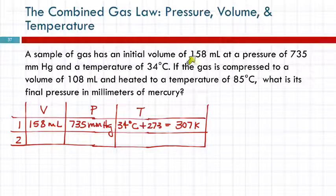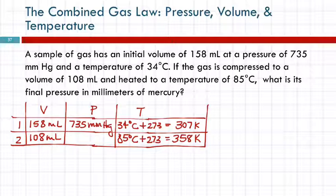So it gives us that information about the gas, and then it's talking about compressing the gas. This is a change that's occurring, so now the numbers that come after this are going to be the second set of conditions. So, the new volume is 108 milliliters, and it's heated to a temperature of 85. We want to make sure we get that in the temperature column and not in the pressure column. And again, change that to Kelvins right away, 85 plus 273, 358. The question is asking, what is the final pressure, and that's the box that's empty, so that's good. This is P2, that's what we're solving for.